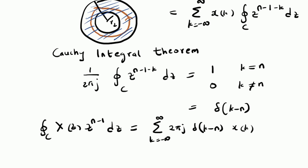This is the term on the right side. By using the shifting property of the unit sample function, we can easily show that the right side equals 2 pi j multiplied by X of n. That is, we are using the shifting property of the unit sample function, so this summation becomes 2 pi j times X of n.